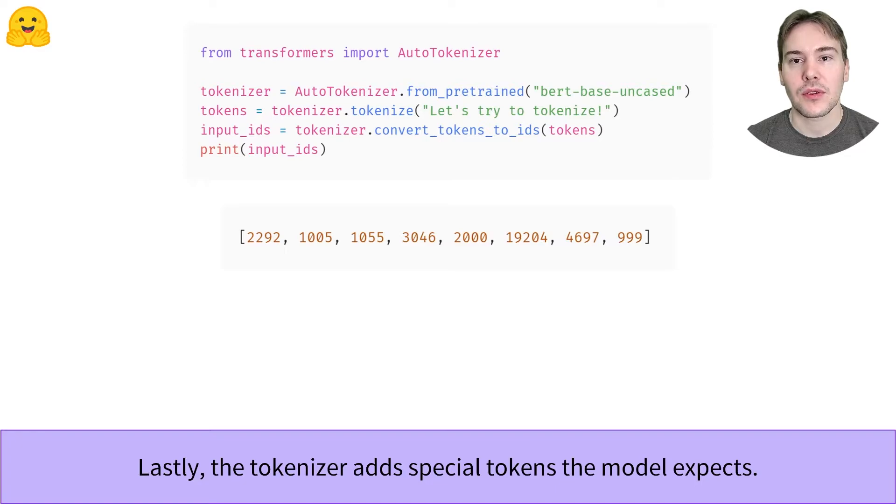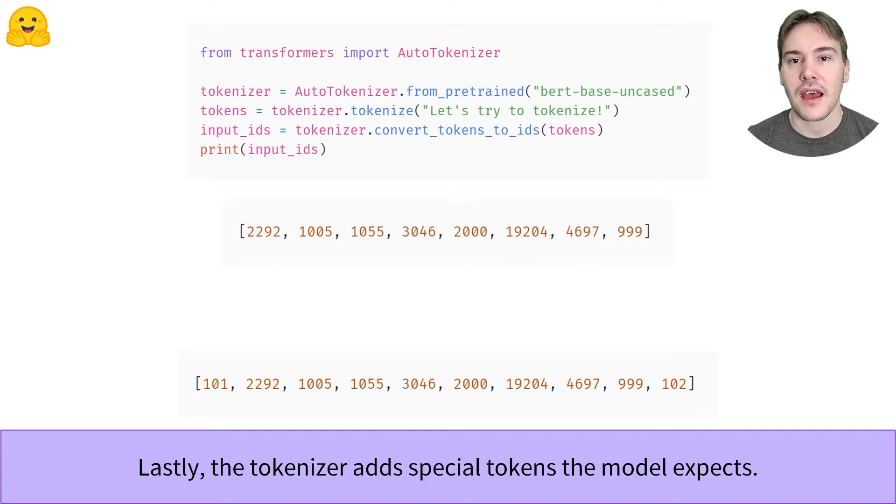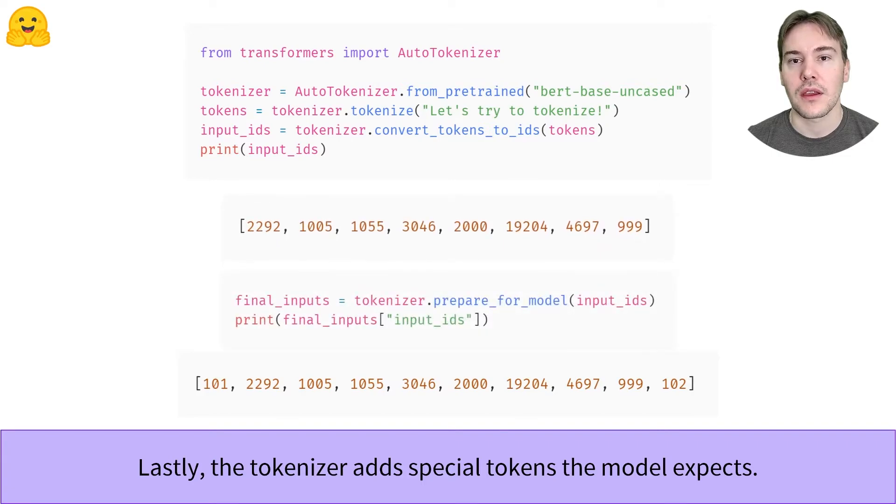You may have noticed that we don't have the exact same results as in our first slide. Or not, as this looks like a list of random numbers anyway, in which case allow me to refresh your memory. We add a number at the beginning and another at the end, but are missing. Those are the special tokens. The special tokens are added by the prepare_for_model method, which knows the indices of those tokens in the vocabulary and just adds the proper numbers in the input IDs list.